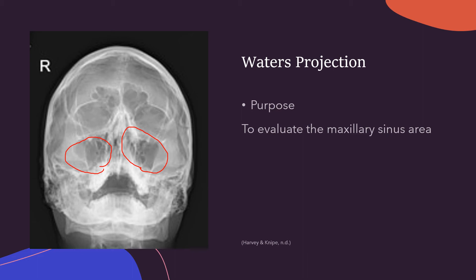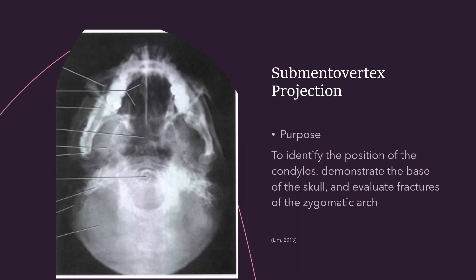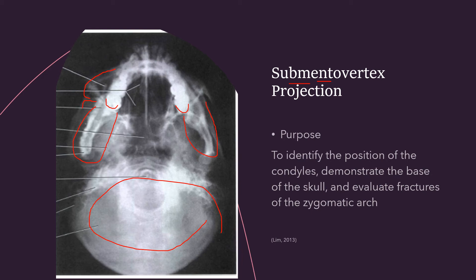Especially here in San Antonio where so many people have sinus problems. The submental vertex projection, as the name implies, is taken from underneath the chin, looking up. You can see the entire occipital area and where the jaw starts, as well as where the mandible articulates with the temporal bones. This projection is used to identify the condyles, demonstrate the base of the skull, and evaluate fractures of the zygomatic arch. You can see these zygomatic arches really beautifully as they come up and articulate with the temporal bone.